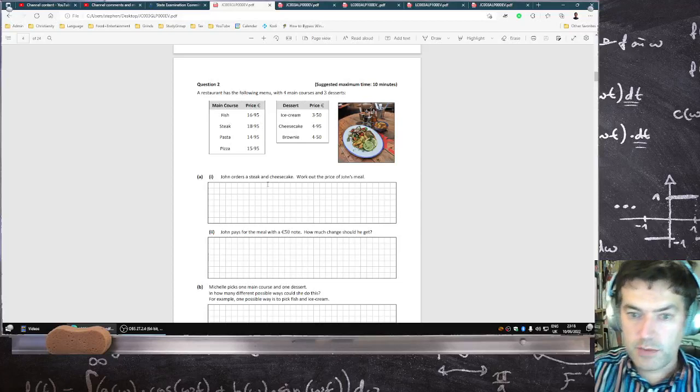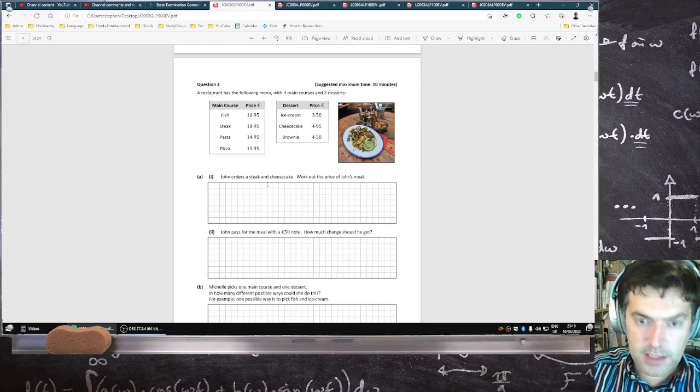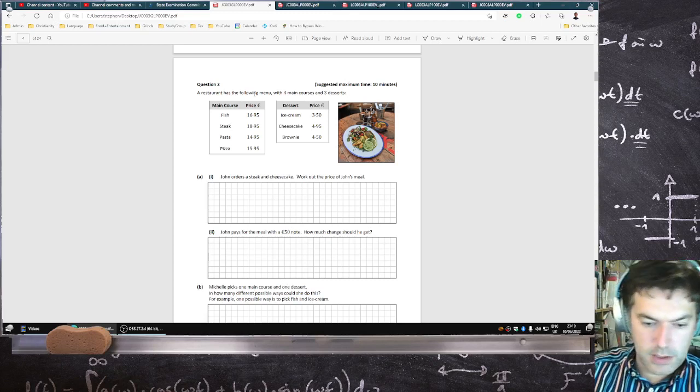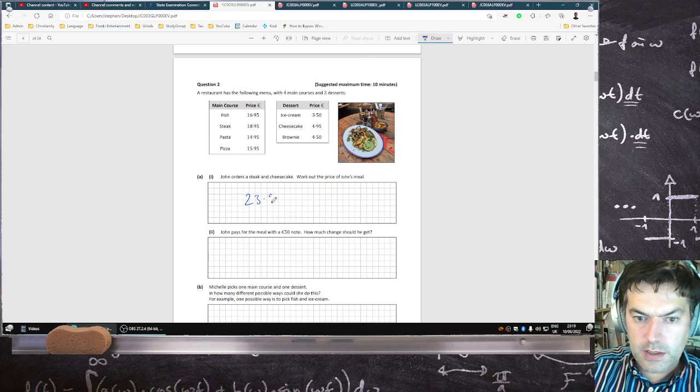John orders a steak and cheesecake. What's the price of this meal? The steak is 18.95, the cheesecake is 4.95, that is 23.90.